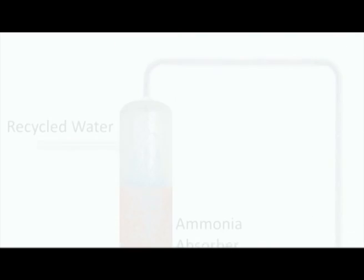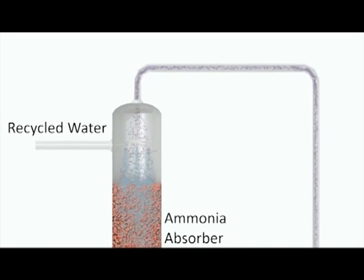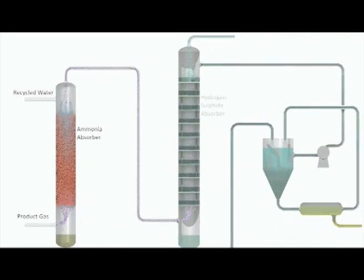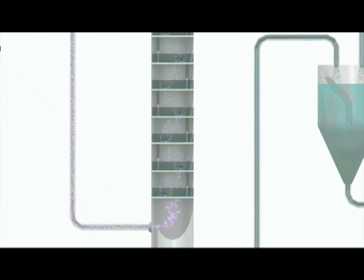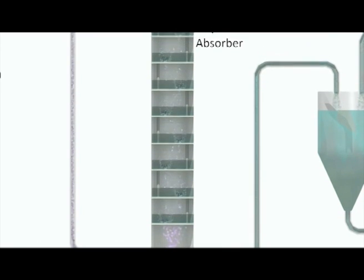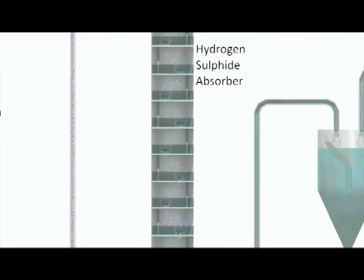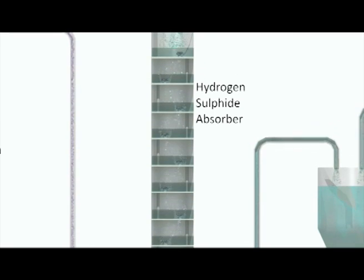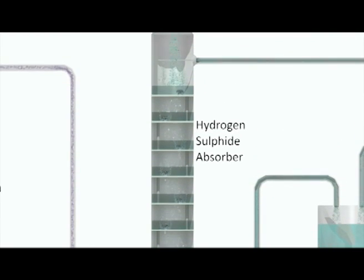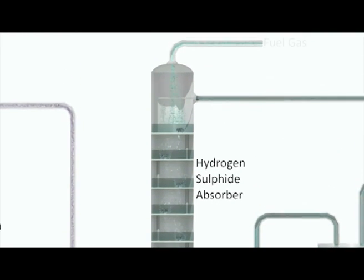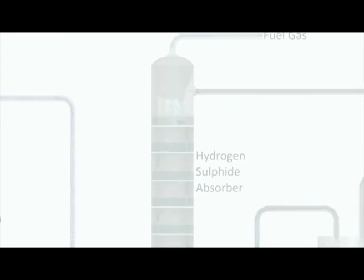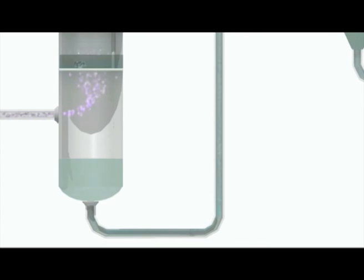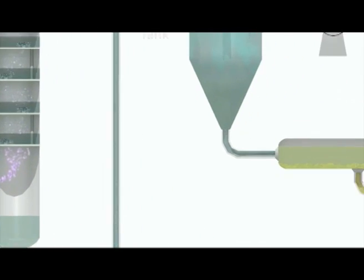The fuel gas, still containing hydrogen sulfide, enters a second absorber, where it encounters a proprietary solution as it passes through a series of liquid trays. This process allows the gas to percolate through the solution and ultimately the absorption of hydrogen sulfide into solution. The remaining gas exits the absorber as fuel gas, while the hydrogen sulfide captured within the solution is sent to a slurry tank.